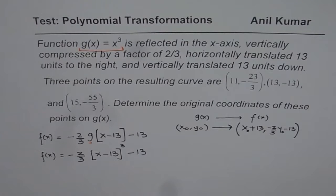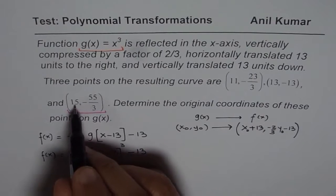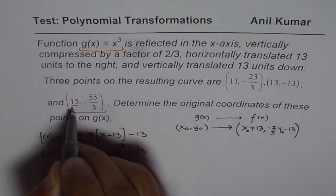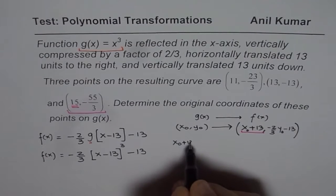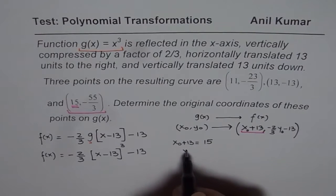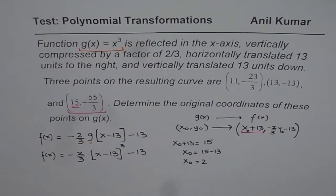Now this equation should help you find the original points for all three. I will do one of them — let me take the last point (15, -55/3) as an example. We have x₀ + 13 = 15, so rearranging gives x₀ = 15 - 13 = 2. So the original x-value on g(x) = x³ is 2.